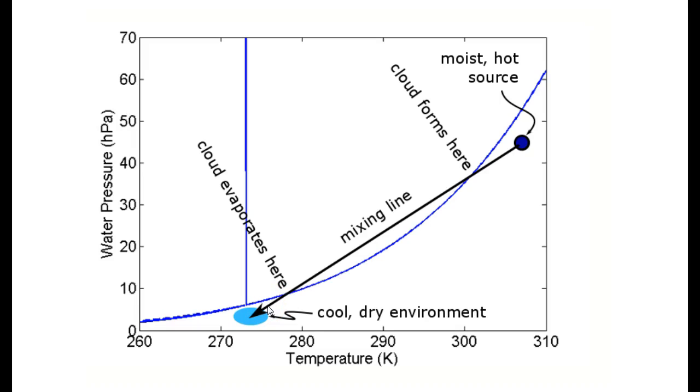Contrails are one example of a mixing cloud. The contrail length tells you something about what the temperature and environmental pressure of the environmental air must be.